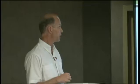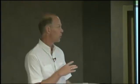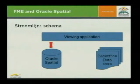Schematically it's fairly simple. We've got one central Oracle spatial data warehouse-like database, a viewing application on top of that, and a whole lot of different kinds of back office data. To put it in there, we use FME. Most of the back office data is non-spatial — we don't use FME for that — but for the spatial data we do. In this example I want to use MicroStation DGN files as an example.